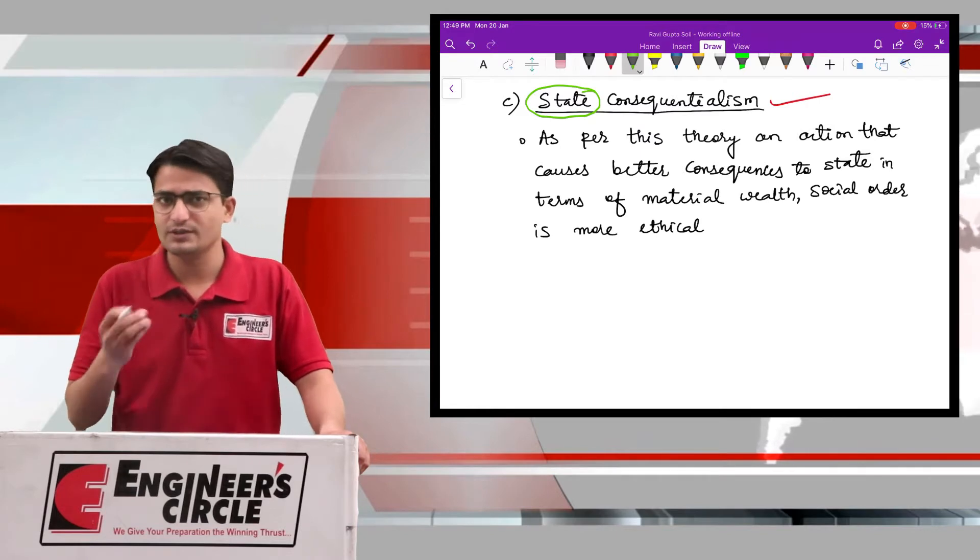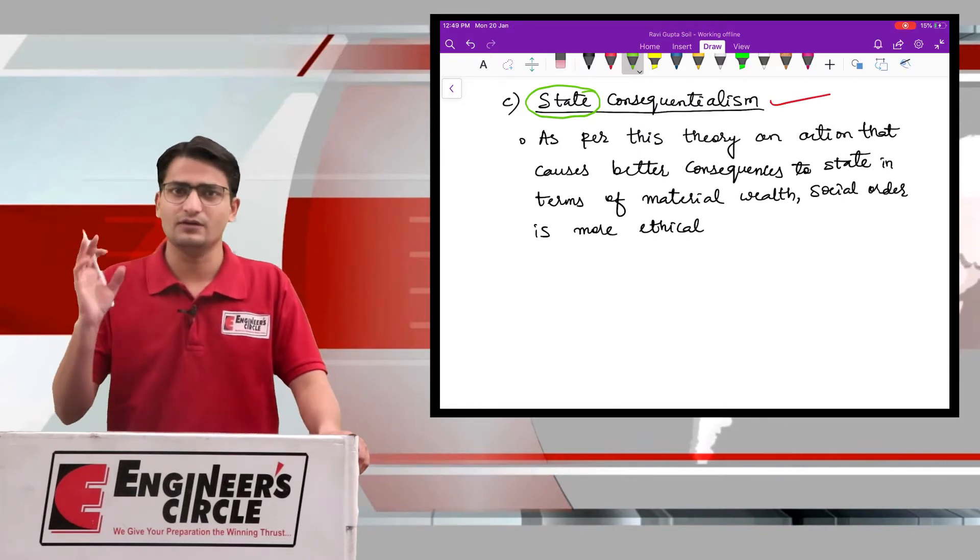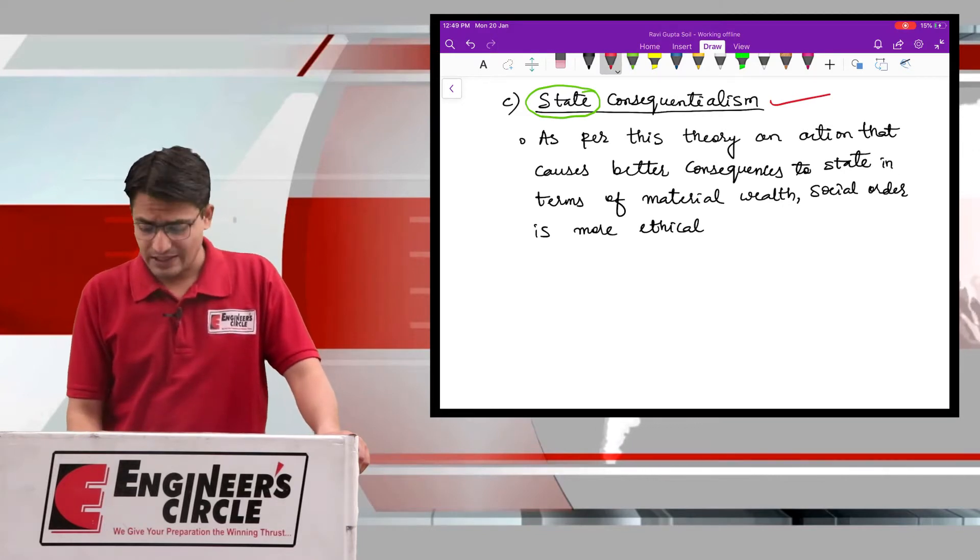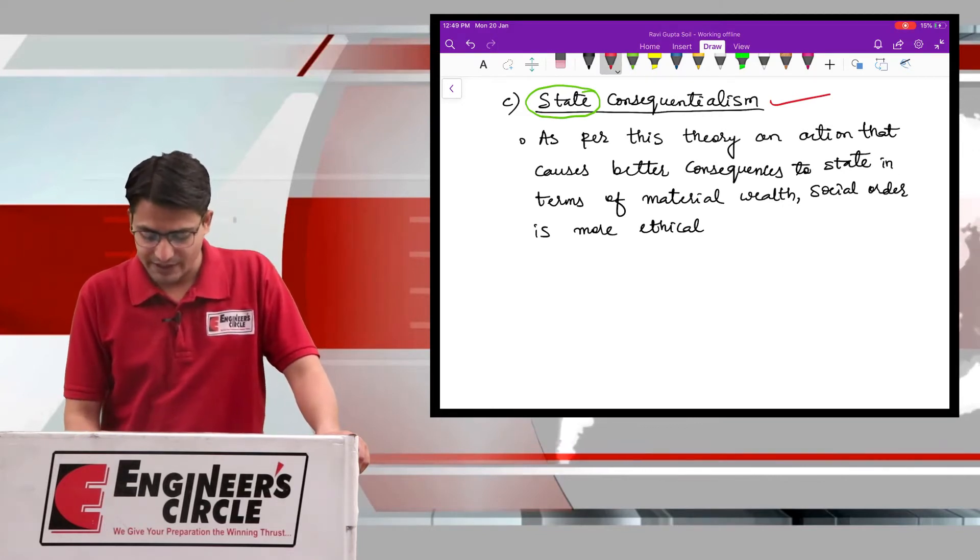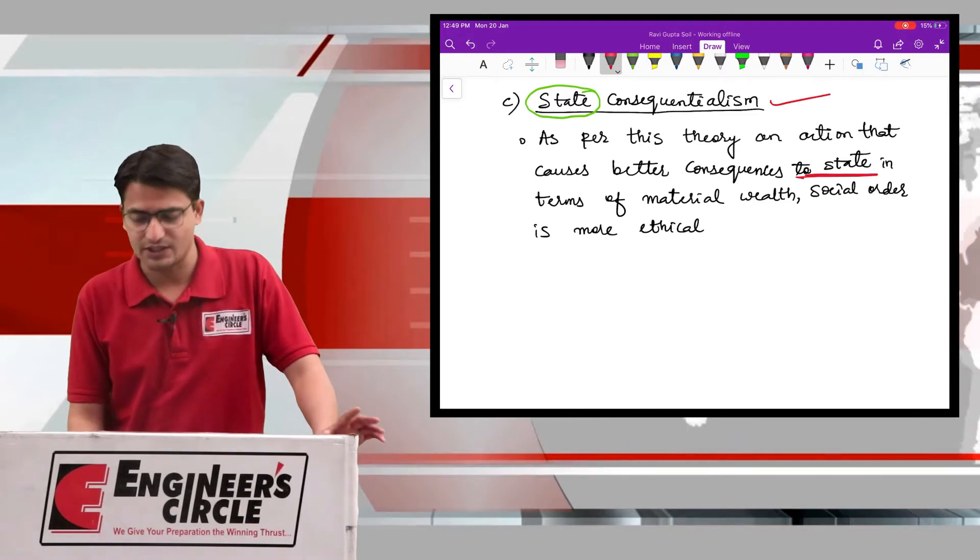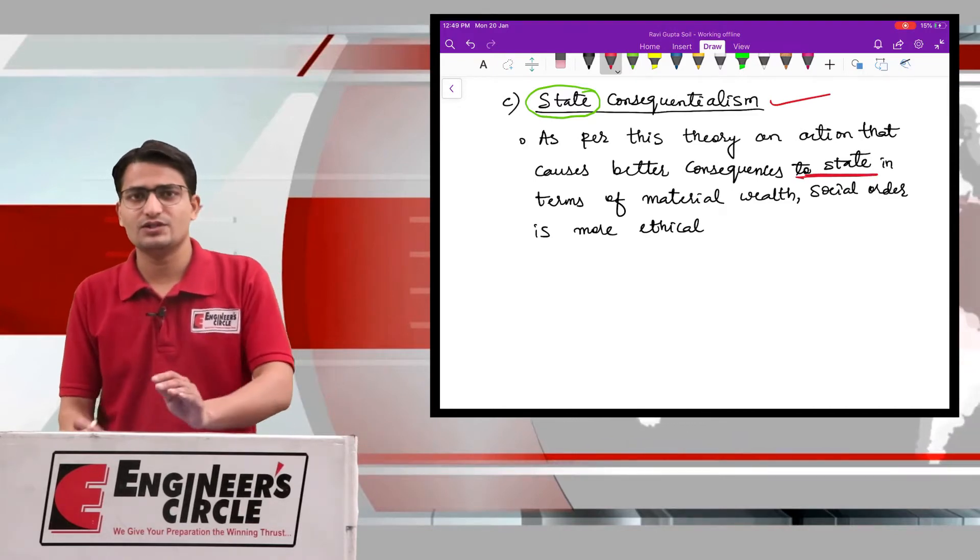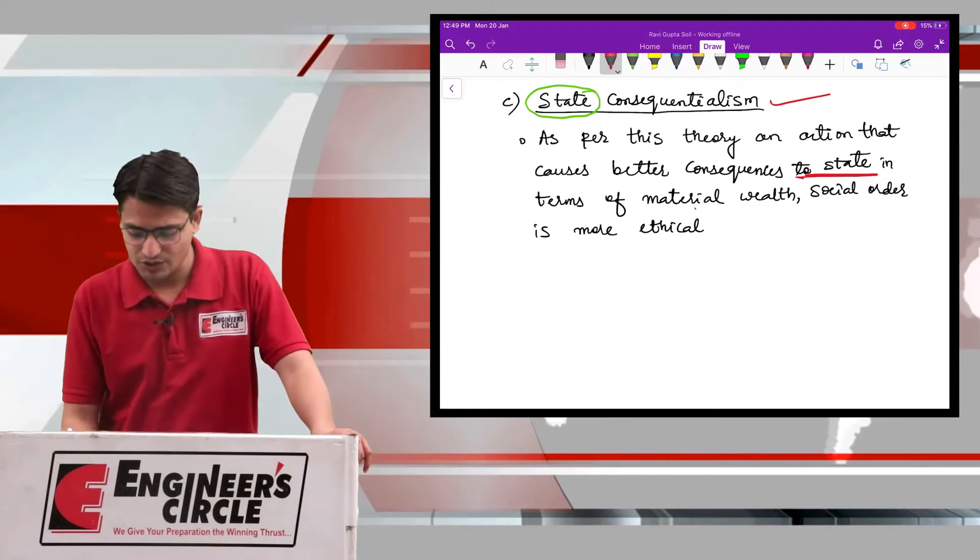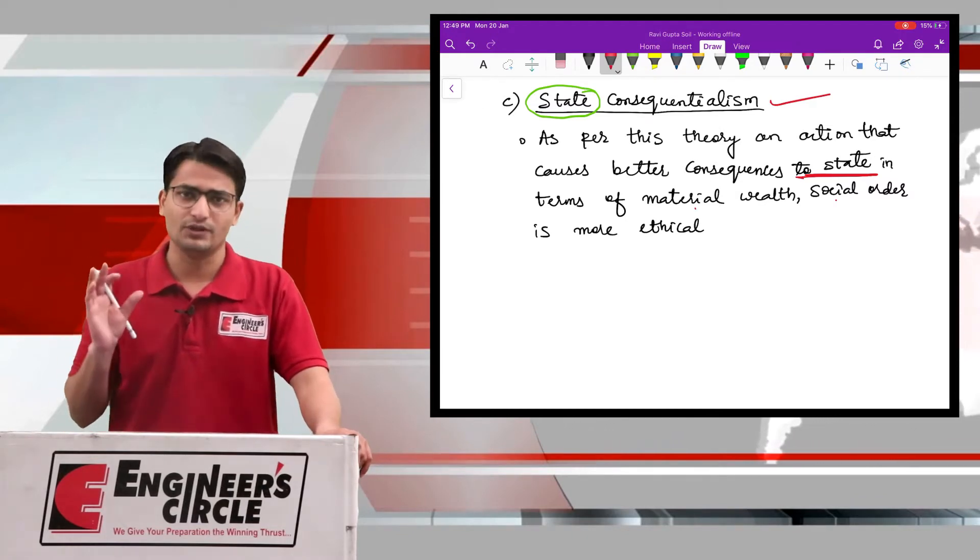Here, what is meant by state? In simple terms, we can relate state to be the government. As per this theory, an action that causes better consequences to state, that is better consequences to the governing body in terms of material wealth, social order, is more ethical. Very simple phenomenon.